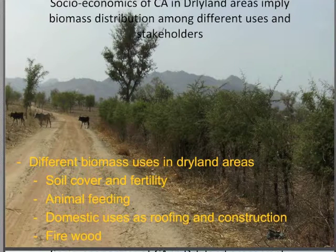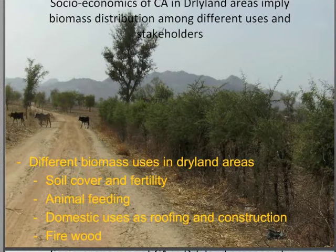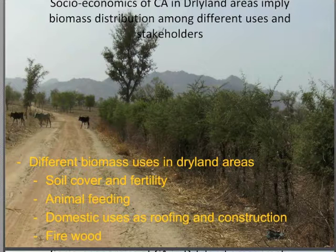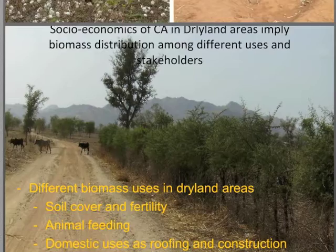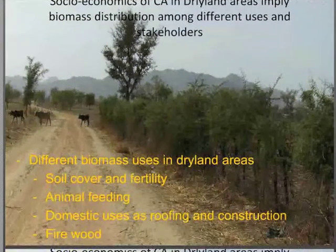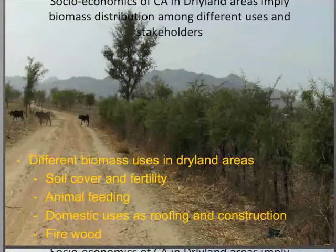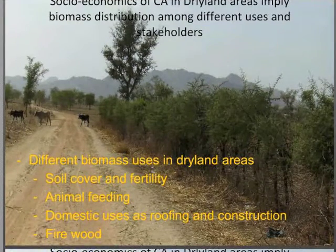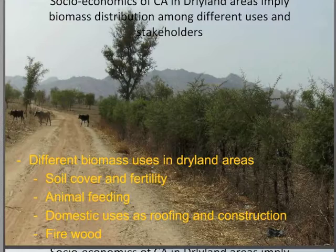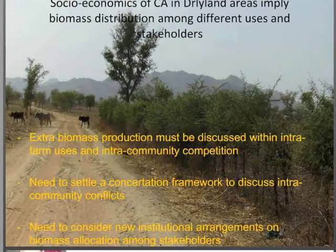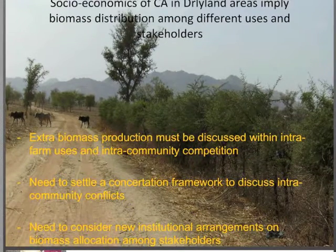Talking about social economics of CA: the social economics of CA consists of biomass distribution among different users. These uses are soil cover and fertility, animal feeding, domestic uses as roofing and construction, and firewood. And how to sustain these different uses?